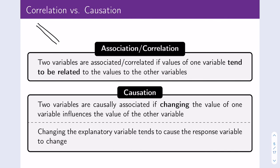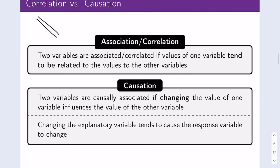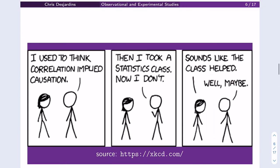One of the really important things in this lecture is understanding under what circumstances we can talk about causation versus association. There's a great XKCD graphic on this: one student says, 'I used to think correlation implied causation. Then I took a statistics class. Now I don't.' The other says, 'Sounds like the class helped.' And the first replies, 'Well, maybe' — because inferring that the class caused the understanding is itself applying the very logic they're questioning.